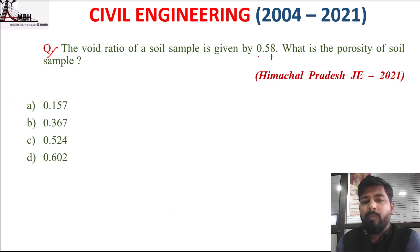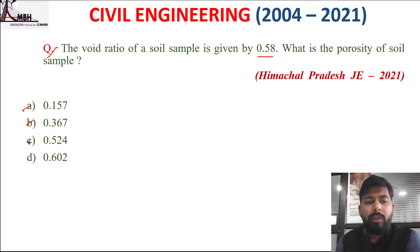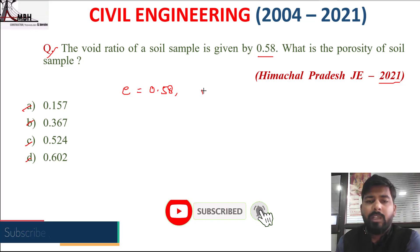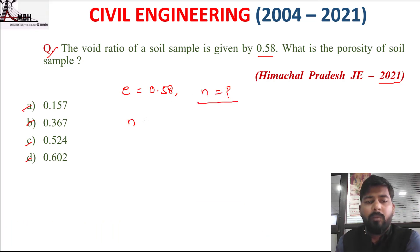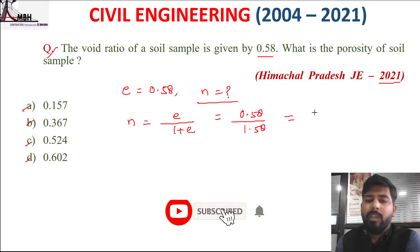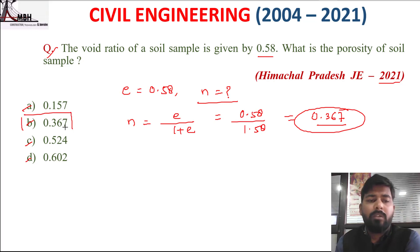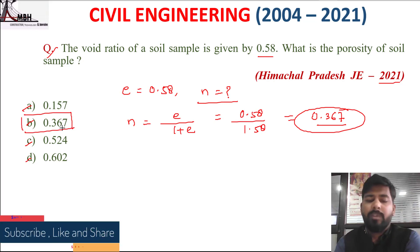Next question: the void ratio of a soil sample is 0.58. What is the porosity? Options: A 0.157, B 0.367, C 0.524, D 0.602. Given void ratio e = 0.58, porosity n = e / (1 + e) = 0.58 / 1.58 = 0.367. So the correct option is B, which is 0.367.